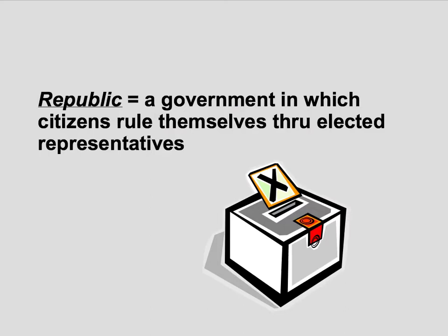What our Founding Fathers wanted to create was a republic — a government in which citizens rule themselves through elected representatives. It's not really a true democracy. A true democracy is where every single person would have a vote for everything. Obviously, not every single person can go to the polls every single day, so we have representatives — people that the citizens themselves elect to represent them.